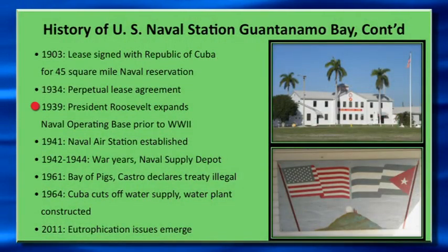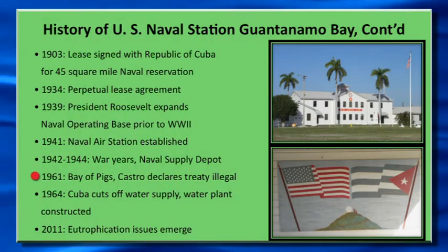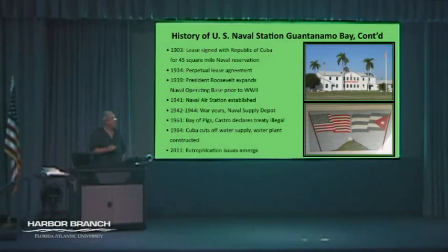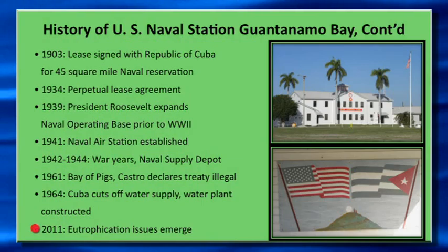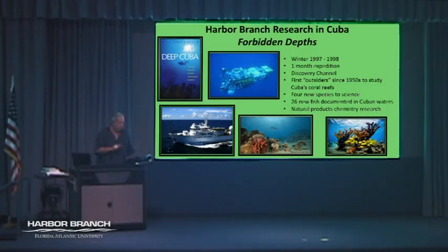President Roosevelt expanded the base in 1939, just prior to World War II, during which it served as a naval depot. Following the Cuban Revolution and Bay of Pigs invasion in 1961, Castro declared the treaty illegal and cut off the water supply in 1964, leading to construction of a desalination plant. It wasn't until 2011 that eutrophication problems in the bay became a serious issue.